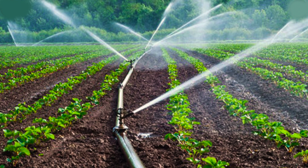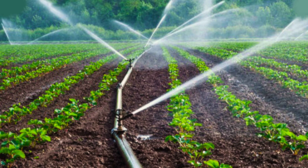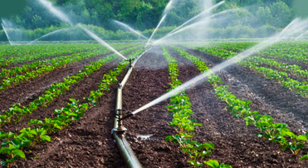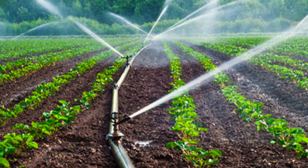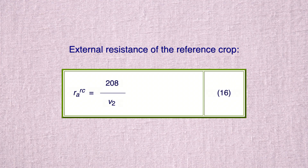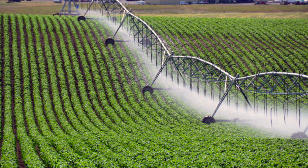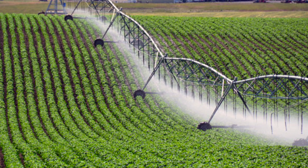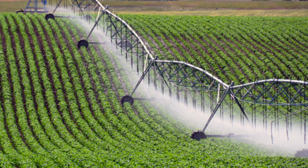The external resistance r sub A, in seconds per meter, for the reference crop (clipped grass, 0.12 meter high), for measurements of wind speed in meters per second, temperature, and humidity at a standardized height of 2 meters, is given by equation 16. For instance, for v sub 2 equal 200 kilometers per day equal 2.31 meters per second, the external or aerodynamic resistance of the reference crop is calculated accordingly.